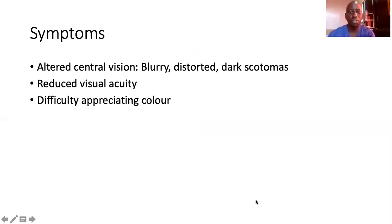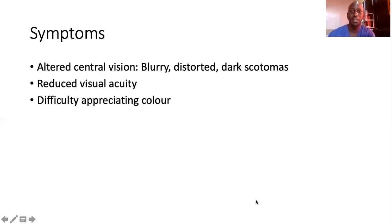The destruction of photoreceptors and retinal pigment epithelial cells results in altered central vision, mostly reported as either blurry or distorted, or patients report scotomas. There is reduced visual acuity on assessment, and patients also often report difficulty appreciating various colors because of macular involvement.